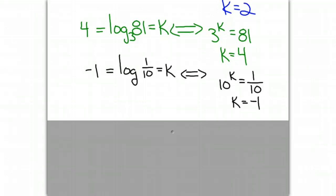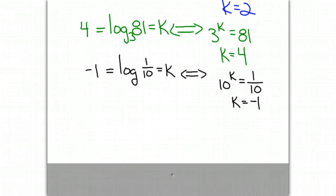Now, what about our friend ln? If we want the ln of e, that's going to equal some value k. And what we need to remember about ln is that ln is simply the log base e. So here we have the log base e of e is equal to k.